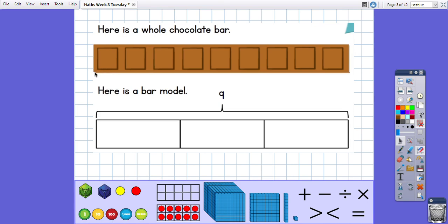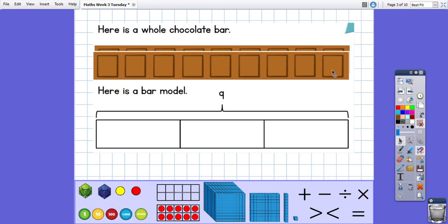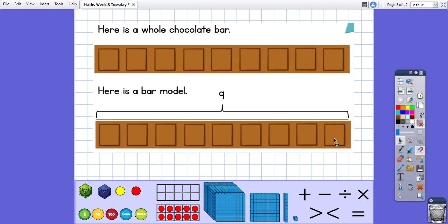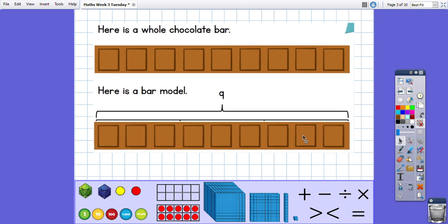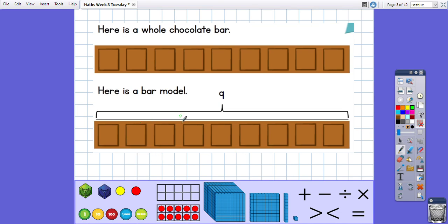Okay, so here is a whole chocolate bar. And I've drawn a bar model with the value of nine because there are nine pieces of chocolate in my bar. It's a very big chocolate bar I've got here. Now if I put my chocolate bar in my bar model like this, it fills it because they are the same value. Now I have hidden it. Okay, so I just need to draw the lines back over. But there is a line here and a line here because my chocolate bar is split in two thirds. So one third of nine would be three because there are three in each of the sections. They are three equal parts of nine.